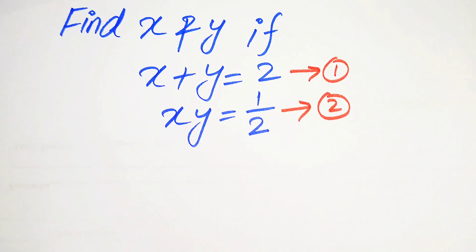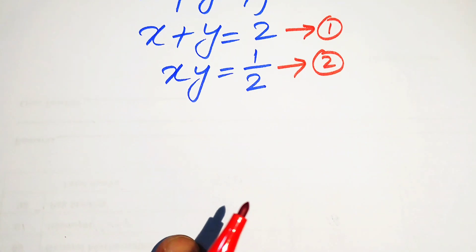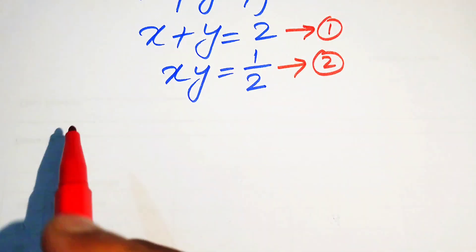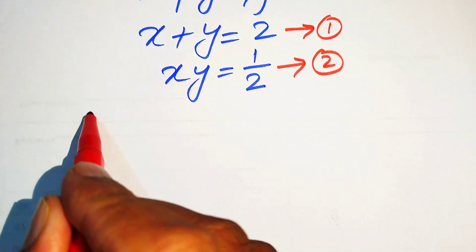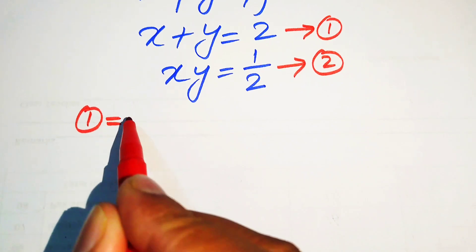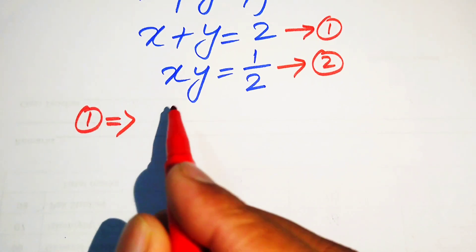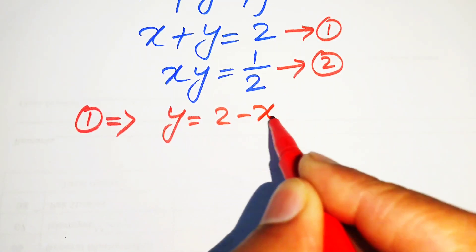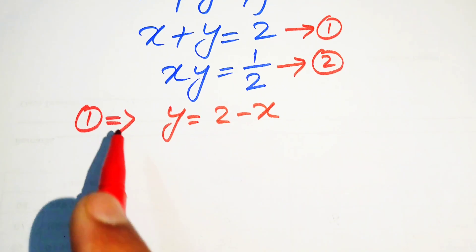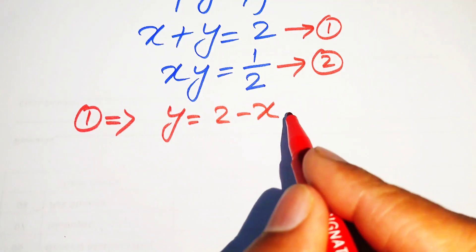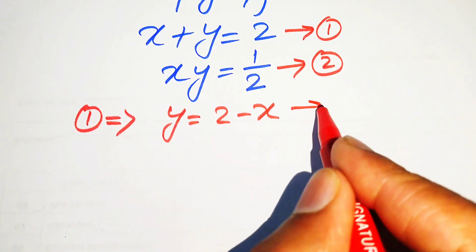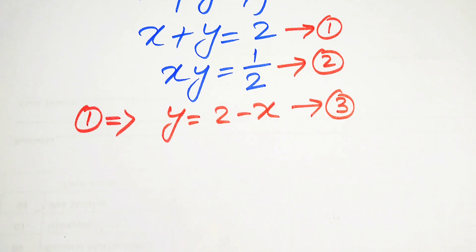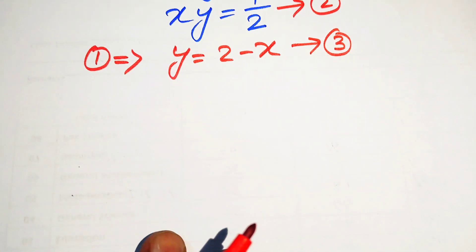First we focus on equation number 1. We move x to the right hand side, so equation number 1 implies that y equals 2 minus x. We call this equation number 3.